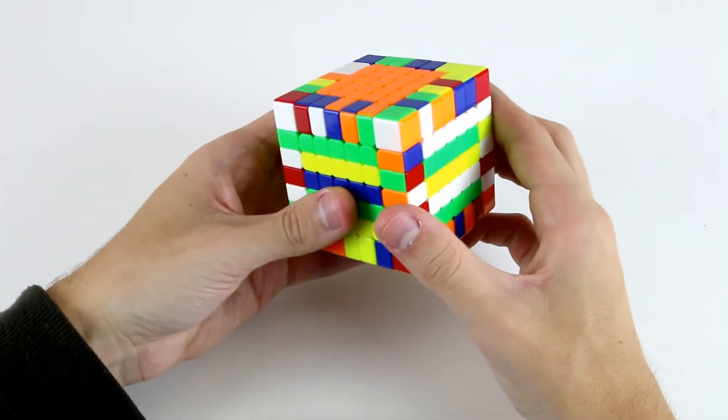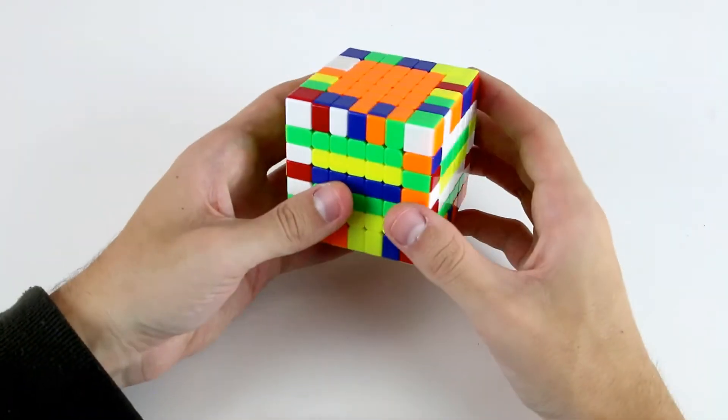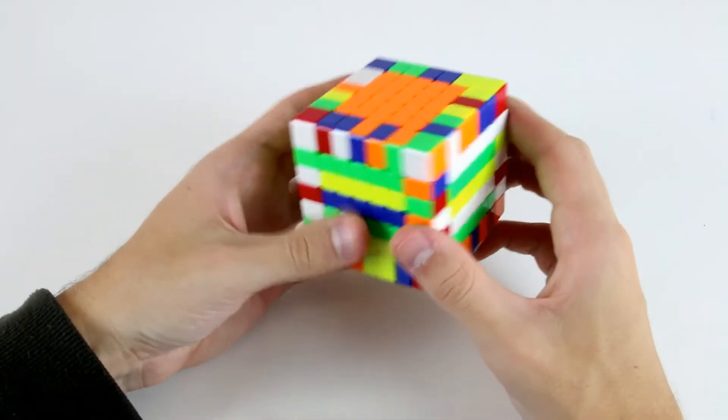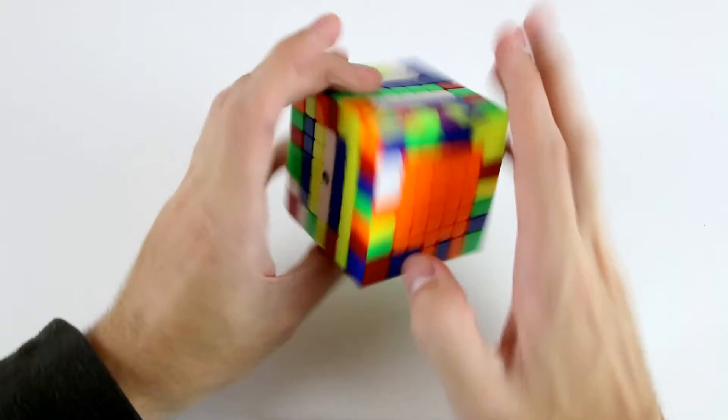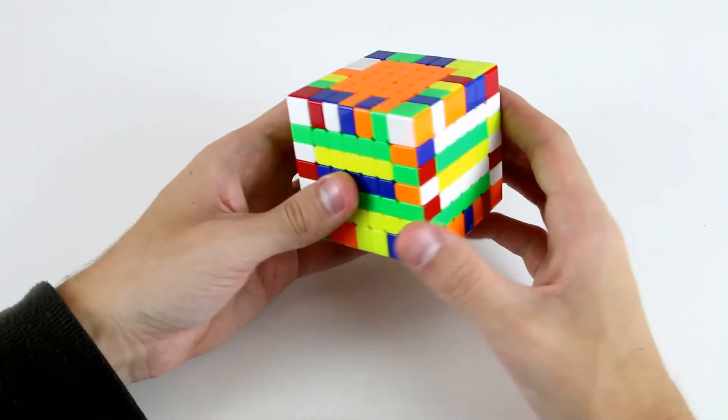So the trade-off is between solving these ones and looking around the cube and spotting these. In this situation, my general advice for intermediate cubers is just to go ahead and start working on the things that you see straight away and not necessarily spend too much time.